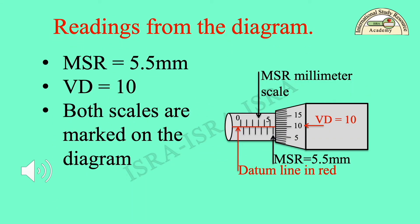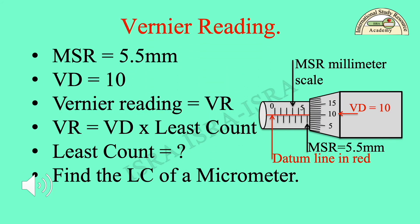Readings from the diagram: MSR is equal to 5.5 mm. VD, Vernier division, is equal to 10. Both scales are marked on the diagram. For the Vernier reading, you know from the diagram that MSR is equal to 5.5 mm, VD is equal to 10, and Vernier reading VR is equal to VD times least count.